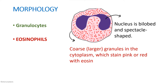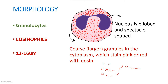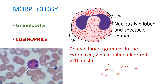The granules of eosinophils contain eosinophil peroxidase, eosinophil major basic protein, and eosinophil cationic protein — these are the three important constituents of the eosinophil granules. The size of eosinophils is around 12 to 16 micrometers, which means it is slightly bigger than that of the neutrophil.